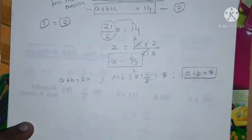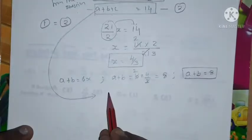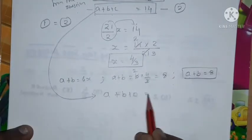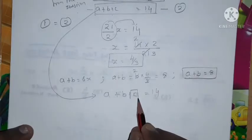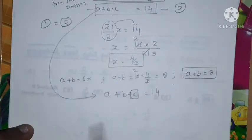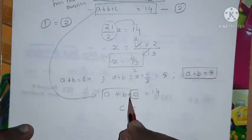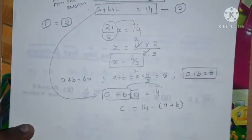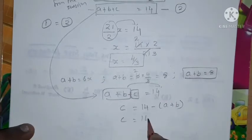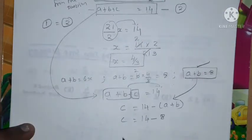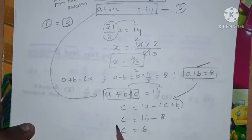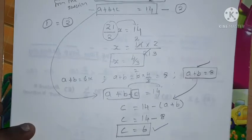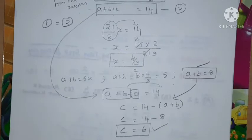From the question, a+b+c = 14. I need to find the value of c, so: c = 14 − (a+b). We found a+b = 8, so substituting: c = 14 − 8 = 6. We found the value of c is 6.